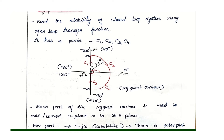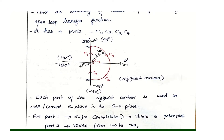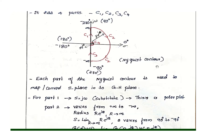The Nyquist contour has four parts: C1, C2, C3, and C4. The S-domain values are converted to the GH plane. The Nyquist plot is plotted in the GH plane, while the transfer function is expressed in the S plane.